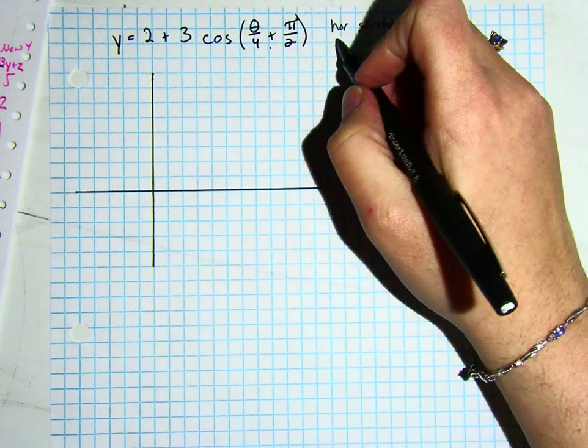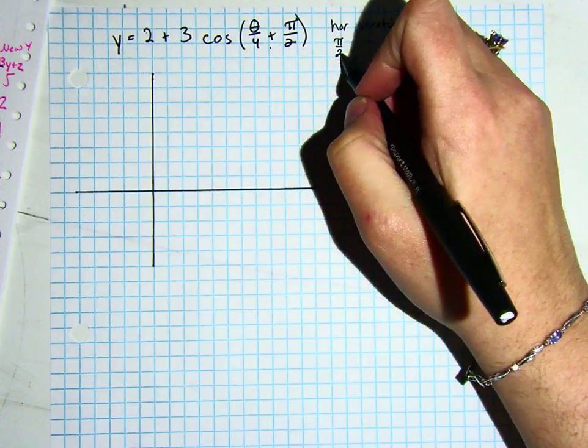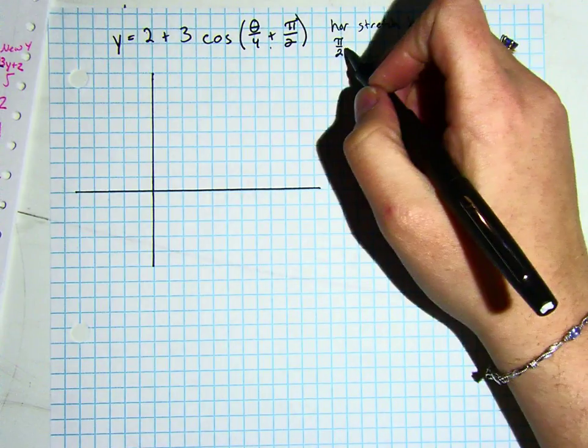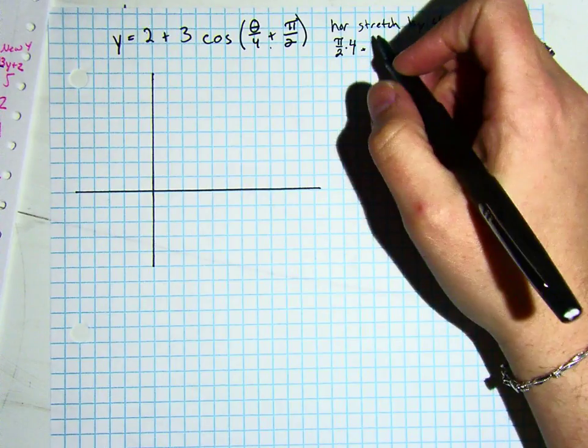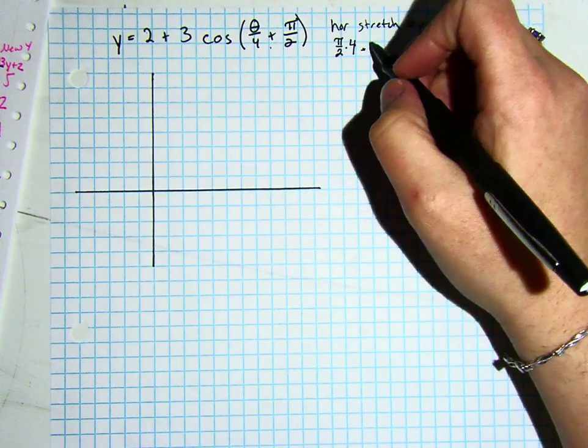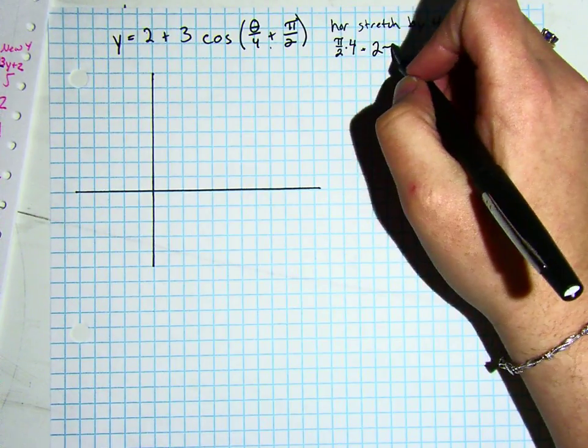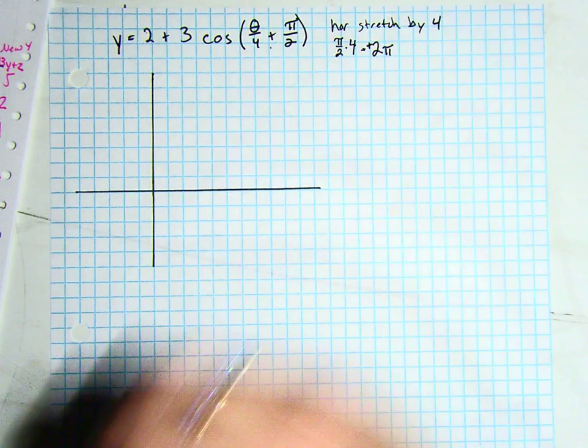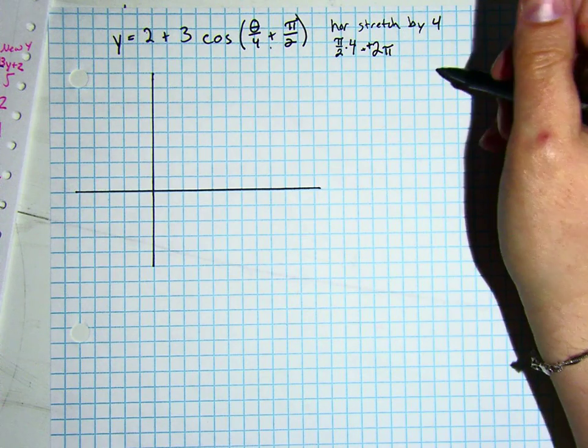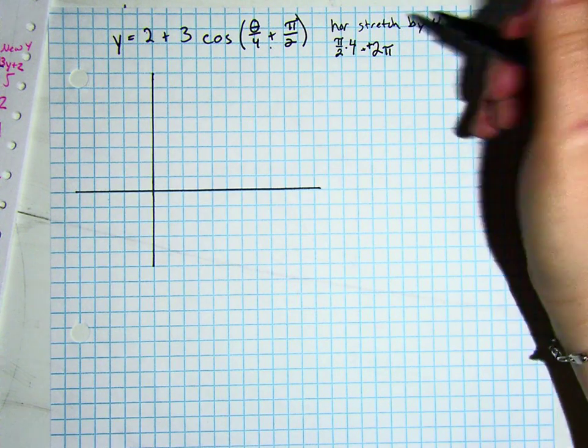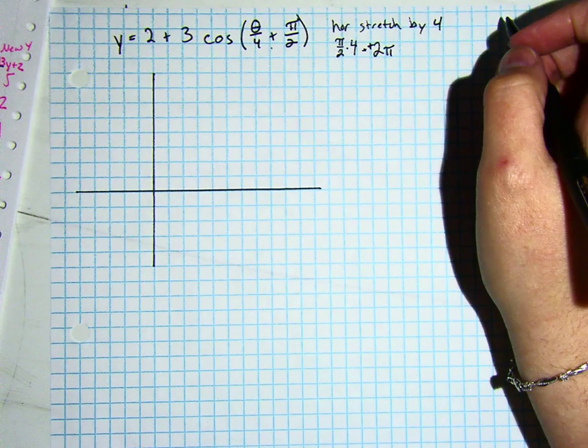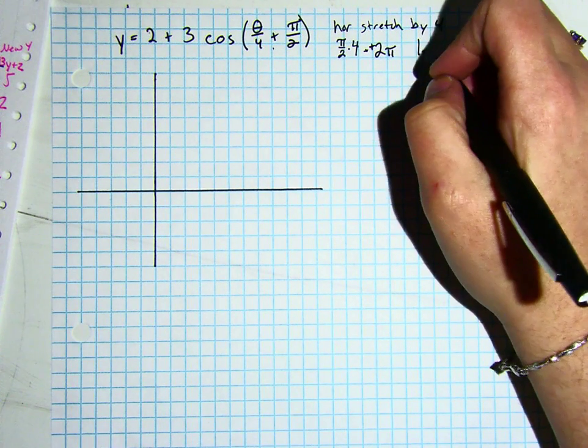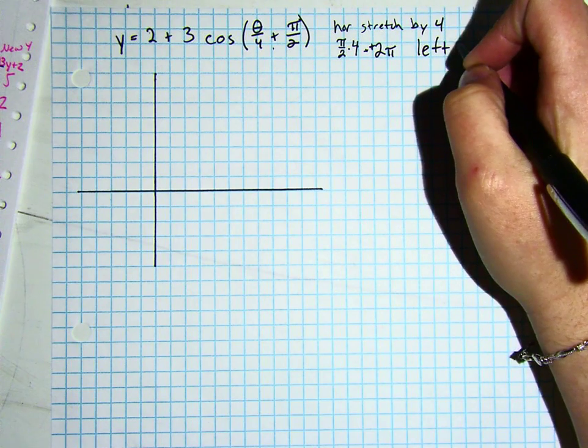Then we are going to deal with this pi over 2, but we have to doctor it by taking our horizontal stretch and multiplying by 4. So pi over 2 times 4 is 2 pi, and that is a positive 2 pi. So normally when we think positive, we go right, but again we have to think inverse since this is on the inside of the function, so we are going to go left 2 pi.